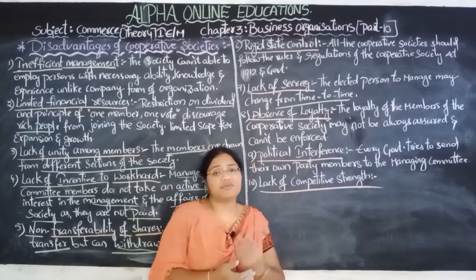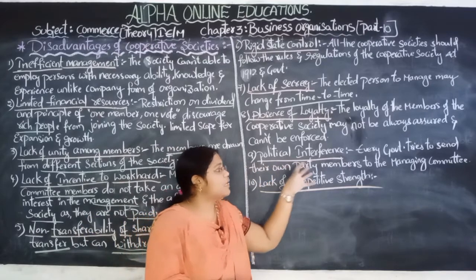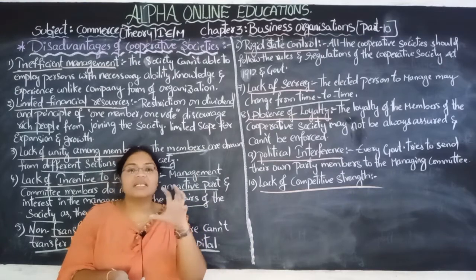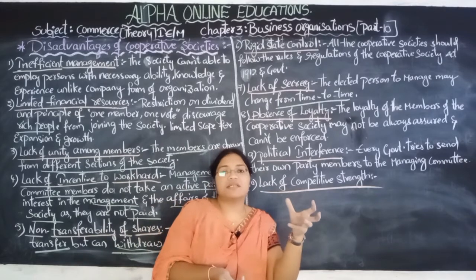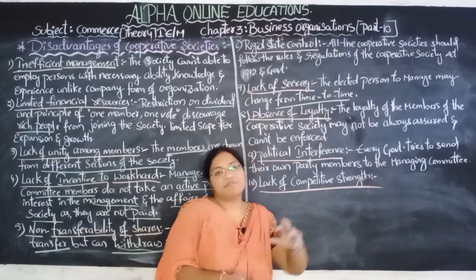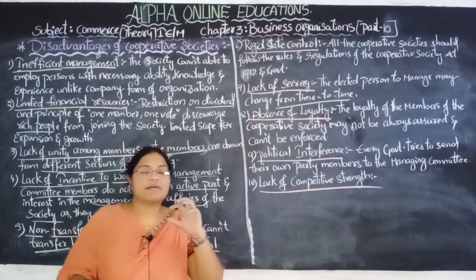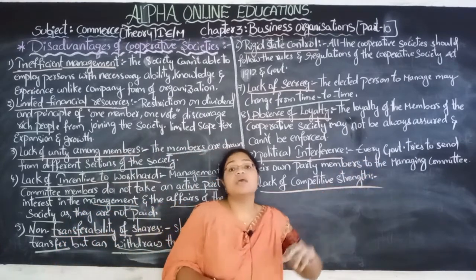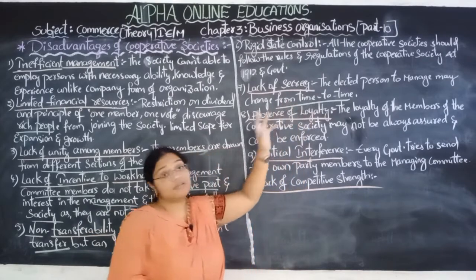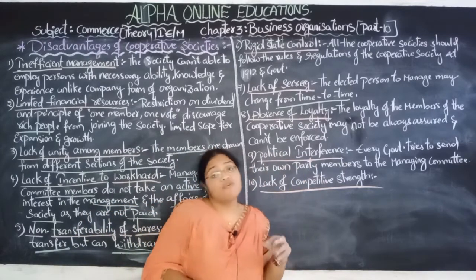The next disadvantage is political interference. The political party in power tries to send its own party members to the managing committee. As elections are held to select managing committee members, the ruling government tries to ensure its members become part of the managing committee. This is a major disadvantage for cooperative societies.